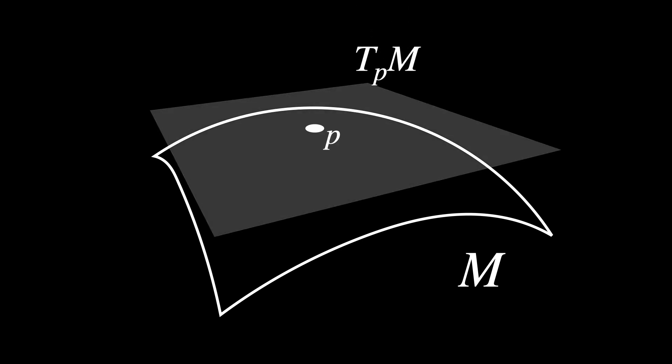Say we have a manifold M, you know, for manifold. In order to measure the distance of the curve, we need to use a tangent space, for a point P on the manifold.